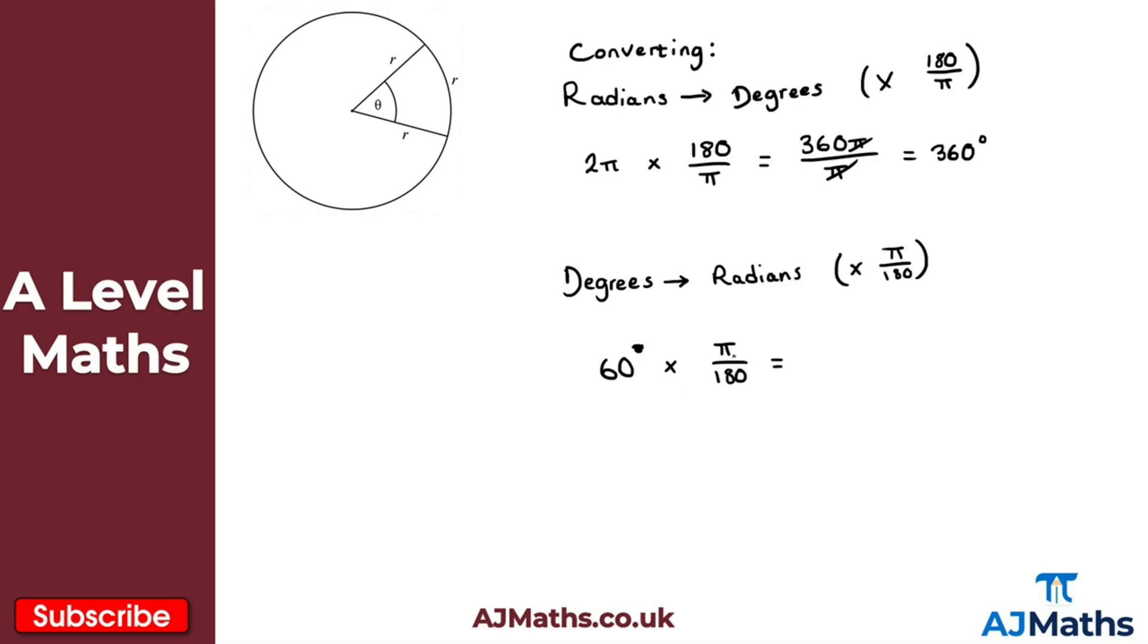And what this would give me here is 60π over 180. So 60π over 180, and then if I just divide top and bottom here by 60 and just simplify, we get π over 3. So we get π over 3 radians.